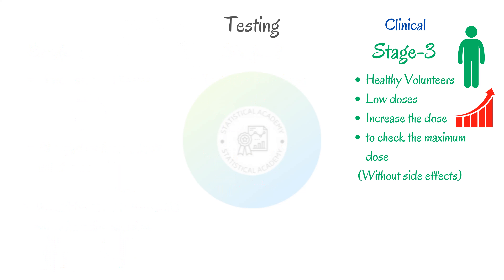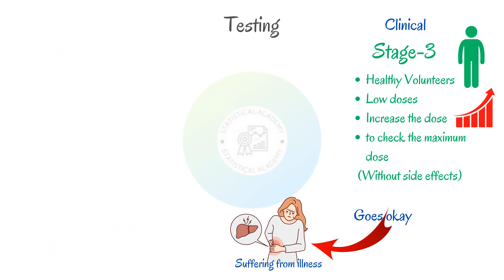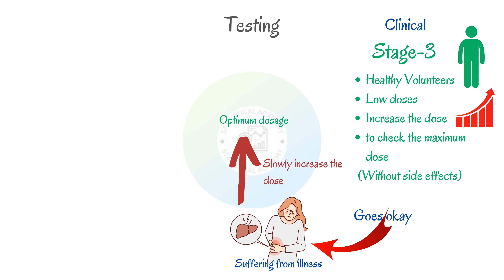The aim here is to basically find the maximum dosage that we can give before we start to get side effects. If this all goes okay, then we give the drug to people suffering from the particular illness that the drug is trying to target, and again slowly increase the dose. This time we are looking for the optimum dosage — the dose at which the efficacy is maximized but the toxicity is minimized.